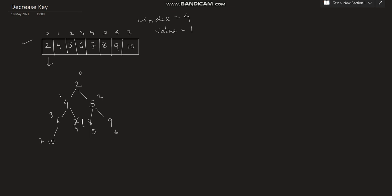In order to restore the min-heap property, we need to compare this decreased value with its parent. We want to create a min-heap and the property has been violated due to the decrease key. So we compare 1 with its parent 4. Since 4 is greater than 1 — that is, the parent is greater than the child — we need to swap the parent and child values.